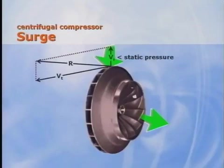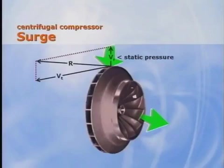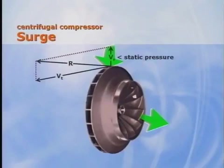As the load is further reduced, the velocity vector can eventually reach a point where the kinetic energy of the refrigerant is no longer large enough to overcome the static pressure in the condenser. When this occurs, the refrigerant vapor flows backwards through the diffuser passages and into the impeller. This instantaneously reduces the pressure inside the impeller passages, allowing the compressor to reestablish the proper direction of refrigerant flow, only to repeat the process again. This unstable condition is known as surge. The refrigerant continues to flow backwards and forwards through the compressor, generating noise and vibration. Prolonged surge is not good for the compressor and should be avoided.